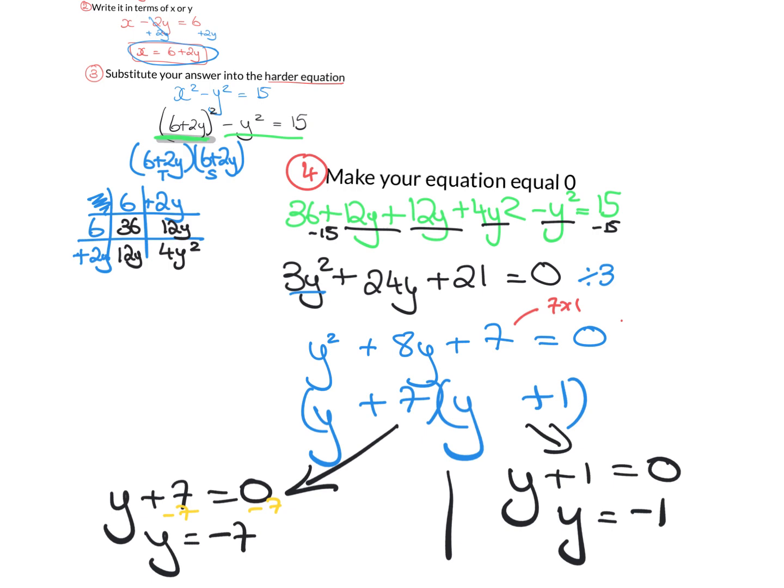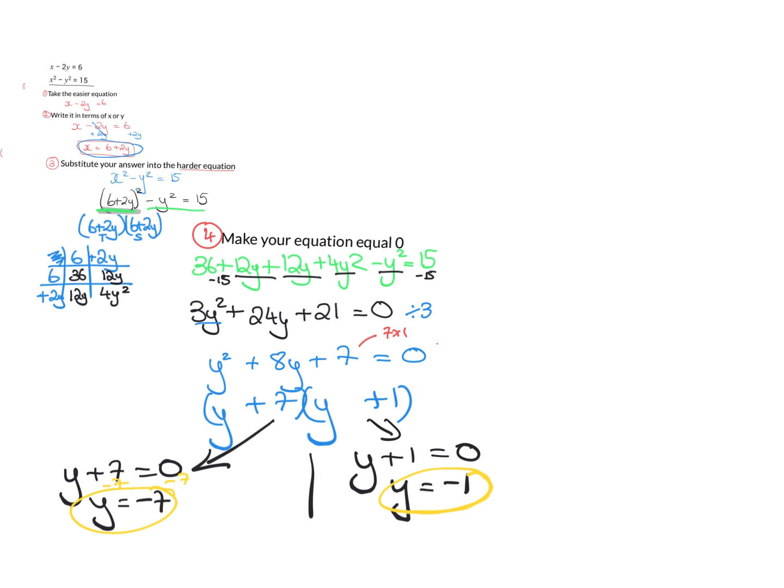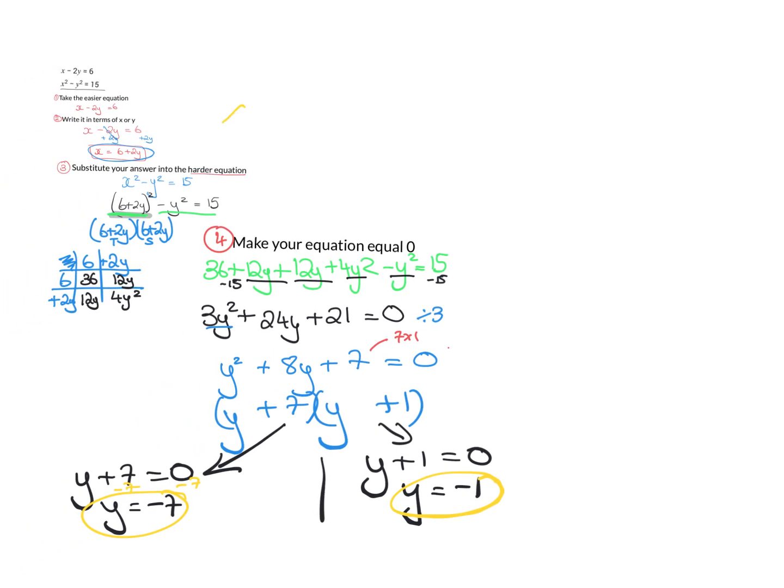So now you've got two y's, you've got two answers, and what you're going to do is you're going to substitute it in to this here, to the step 2. So step 2 was x equals 6 plus 2y. That's what we had decided. So now, if y is minus 7, I'd get an answer. And if y was equal to minus 1, I'd get another answer. So let's see what those answers would be.